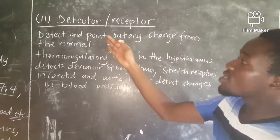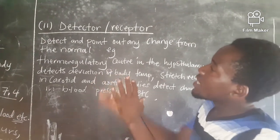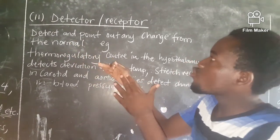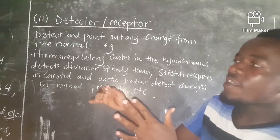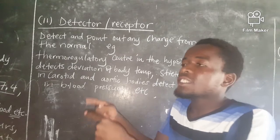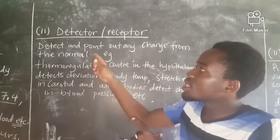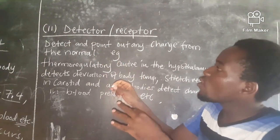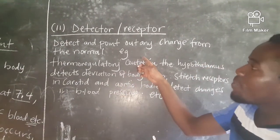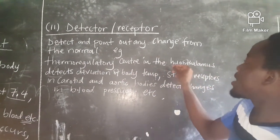Another component of the homeostatic system is the detector or receptor. Detectors and receptors are simply structures in our bodies that detect and point out any change from the normal. For example, if temperature goes below or above 37, it is these receptors or detectors that inform us that there has been a change.